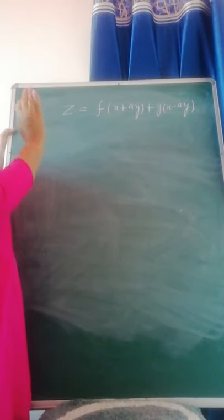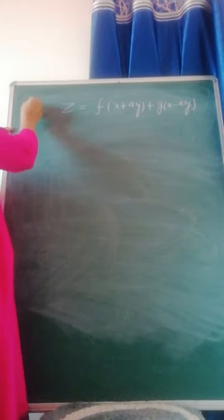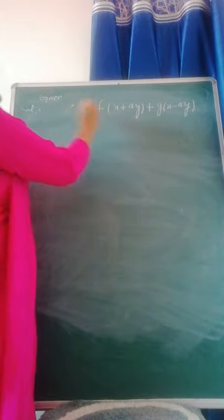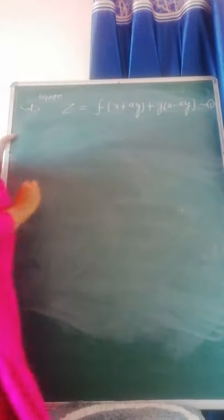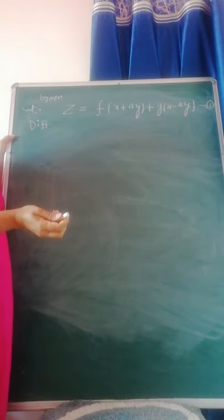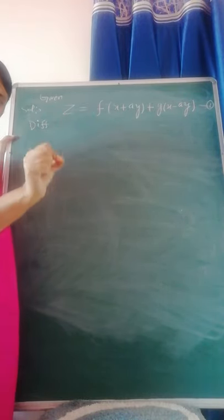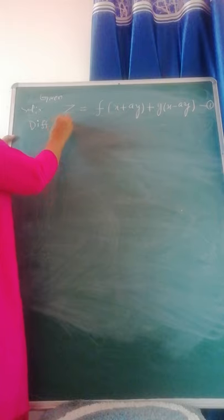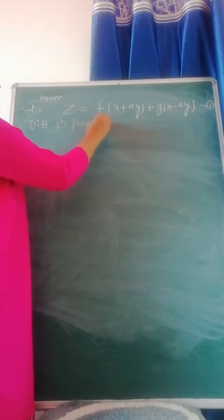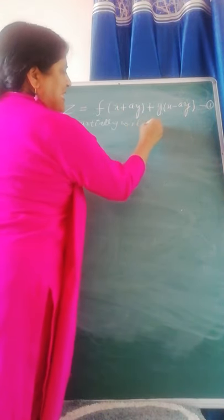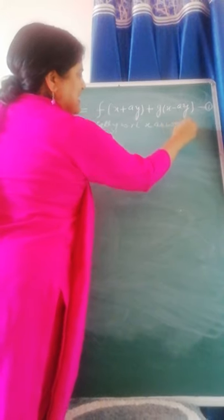So, whenever we have to form a second-order equation like this, first write the given relation — let it be equation 1. Now, what you have to do: differentiating equation 1 partially with respect to x as well as y.